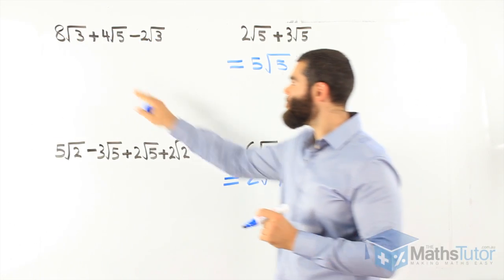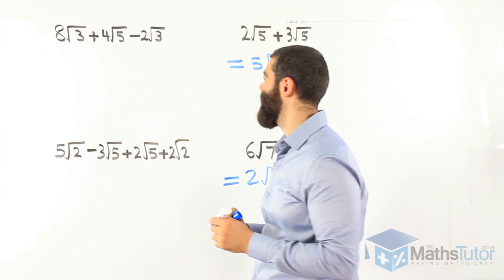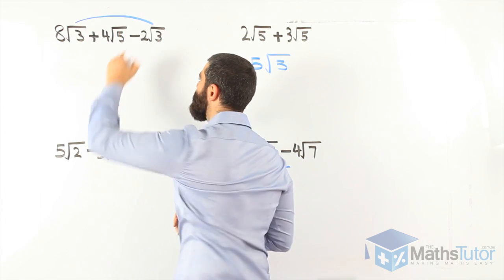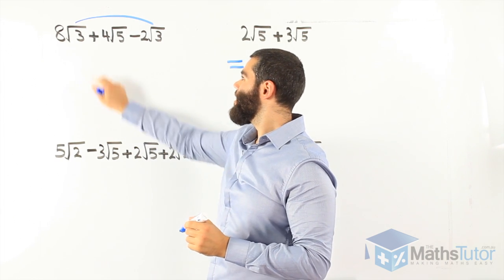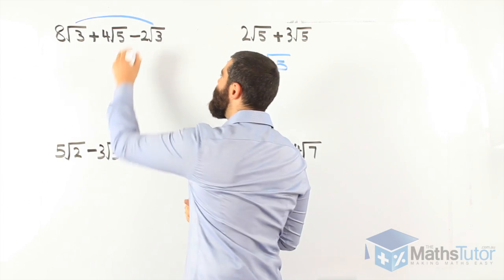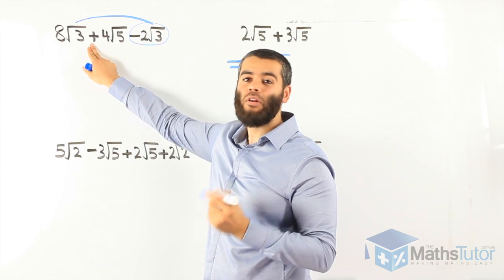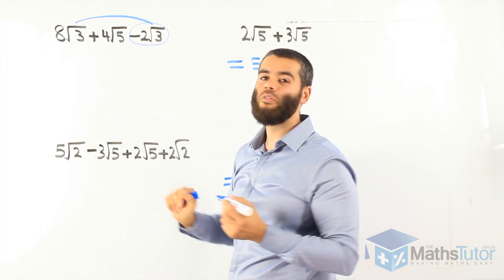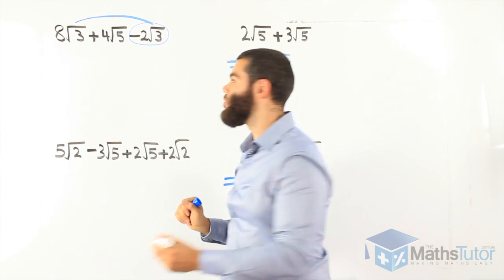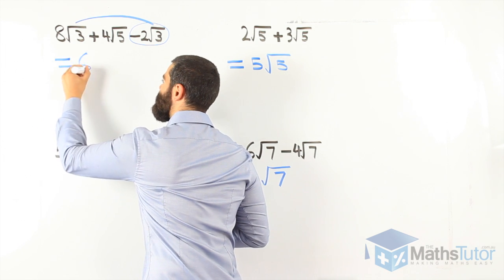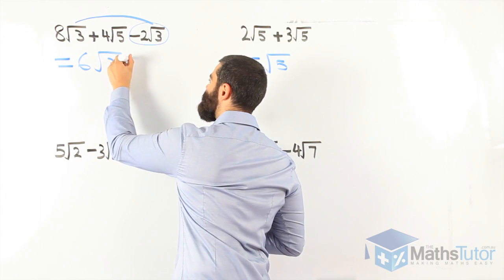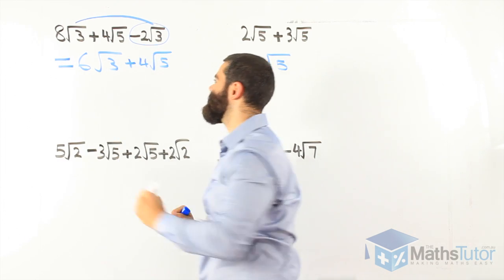Let's do some more. 8 root 3 plus 4 root 5 minus 2 root 3. Where are the like thirds? Root 3 and root 3 are like thirds. The plus belongs to 4 root 5 and the minus belongs to 2 root 3. So 8 root 3 minus 2 root 3: 8 take away 2 is 6. Our answer is 6 root 3 plus 4 root 5.